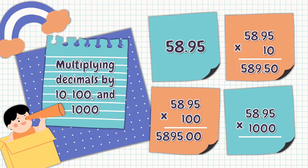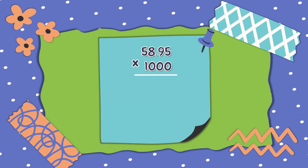When we multiply 58 and 95 hundredths by 10, the answer is 589 and 50 hundredths. When we multiply 58 and 95 hundredths by 100, the answer is 5,885. Can you see the similarities? I hope so!